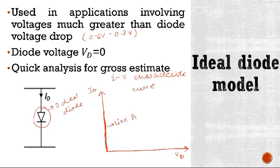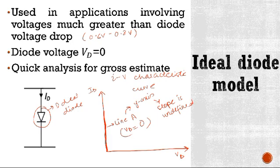This is line A where Vd is equal to 0. Since this line A is on the y-axis, its slope is undefined. So this is the current voltage characteristic of an ideal diode model.